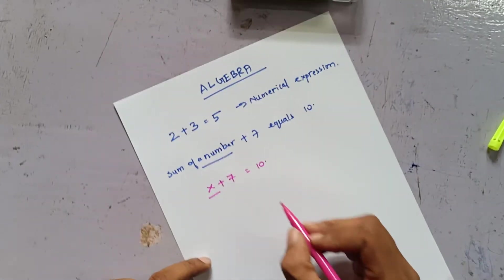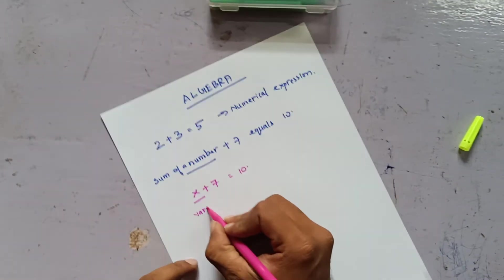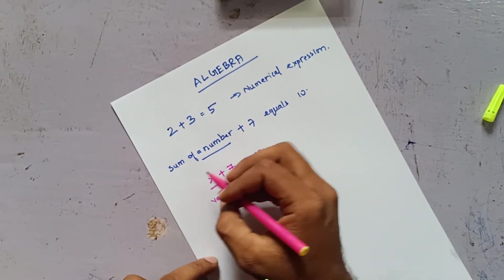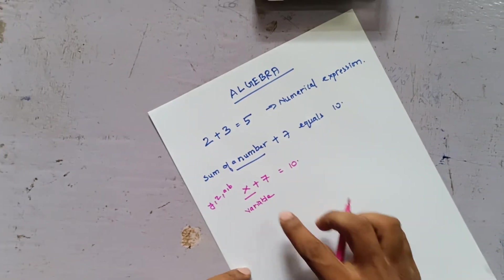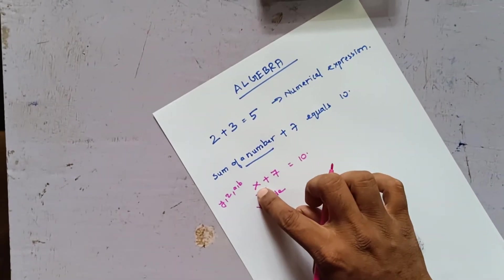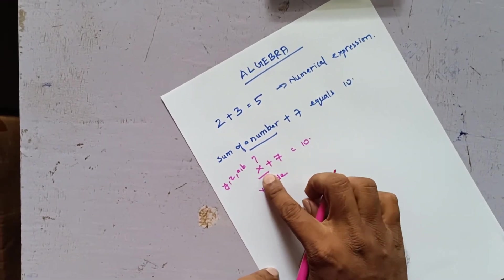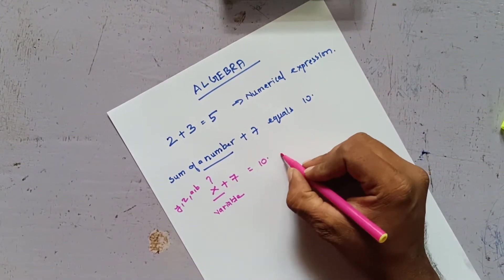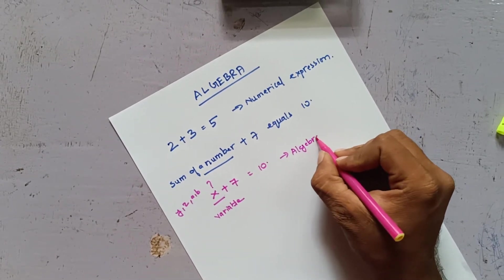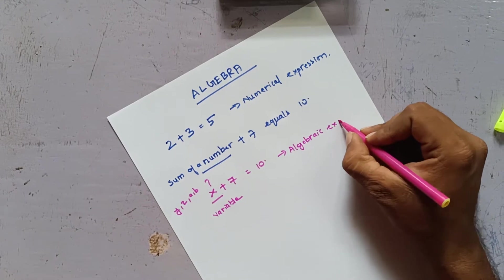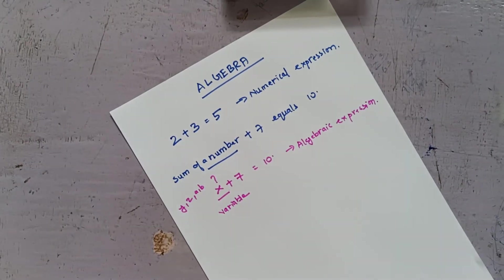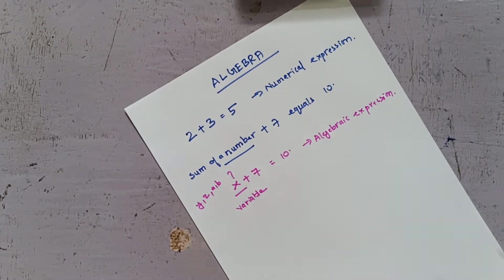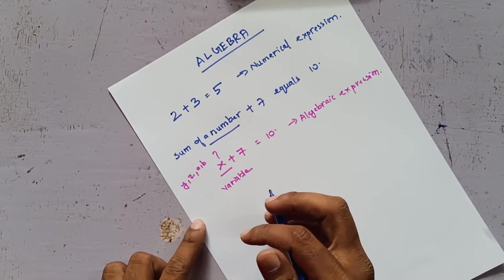This X is called a variable. I'm calling it a variable because X can change — I can call it X, Y, Z, A, B, anything. This is unknown, so I call it a variable. And X plus 7 equals 10 is called an algebraic expression or algebraic equation.